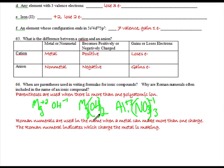Roman numerals. Roman numerals are used in the name when a metal can make more than one charge. These are your D block guys and under the stair step. These guys, if you see that they're involved in a compound, you should immediately check your reference sheet and see if it's on the list. Because if it's on the list, that means it makes more than one charge and you have to use Roman numerals.